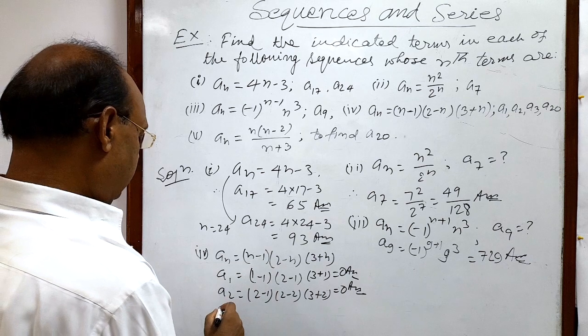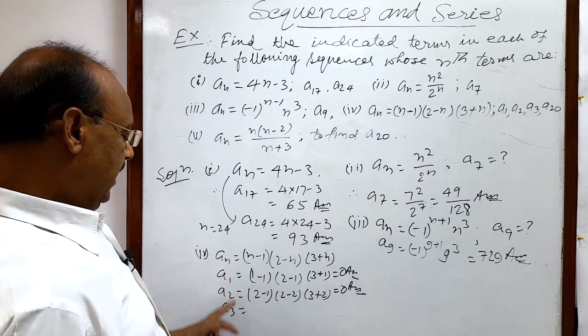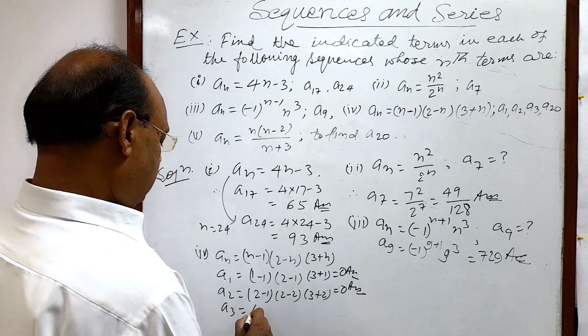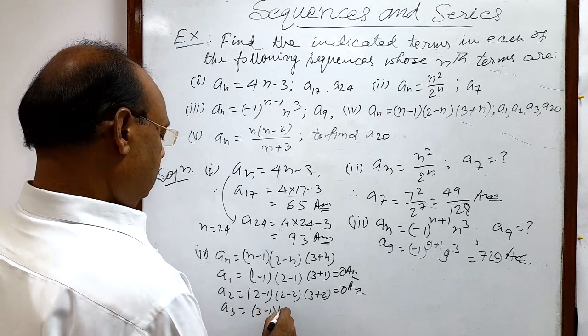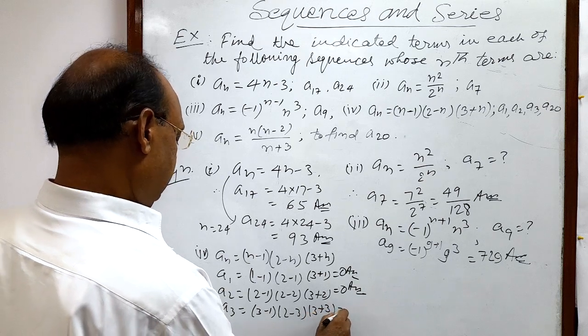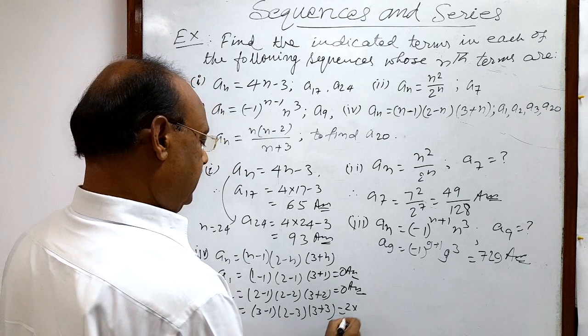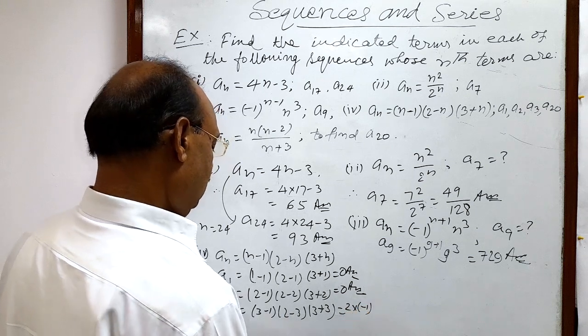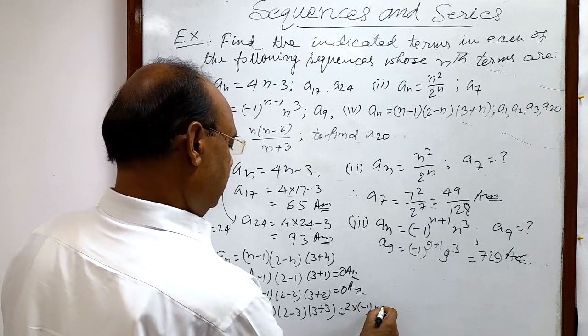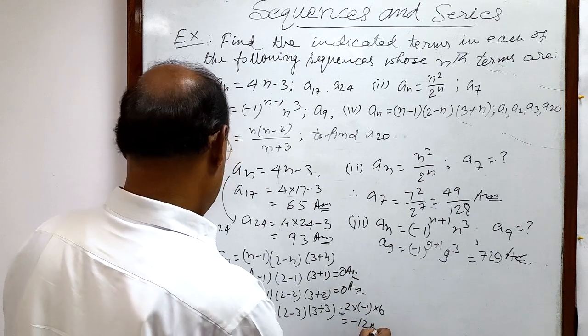Next a3, in place of n we have to put 3. So this is 3 minus 1, 2 minus 3, and 3 plus 3. 3 minus 1 is 2 into 2 minus 3 is minus 1 into 3 plus 3 is 6, and this is equal to minus 12. This is the answer.